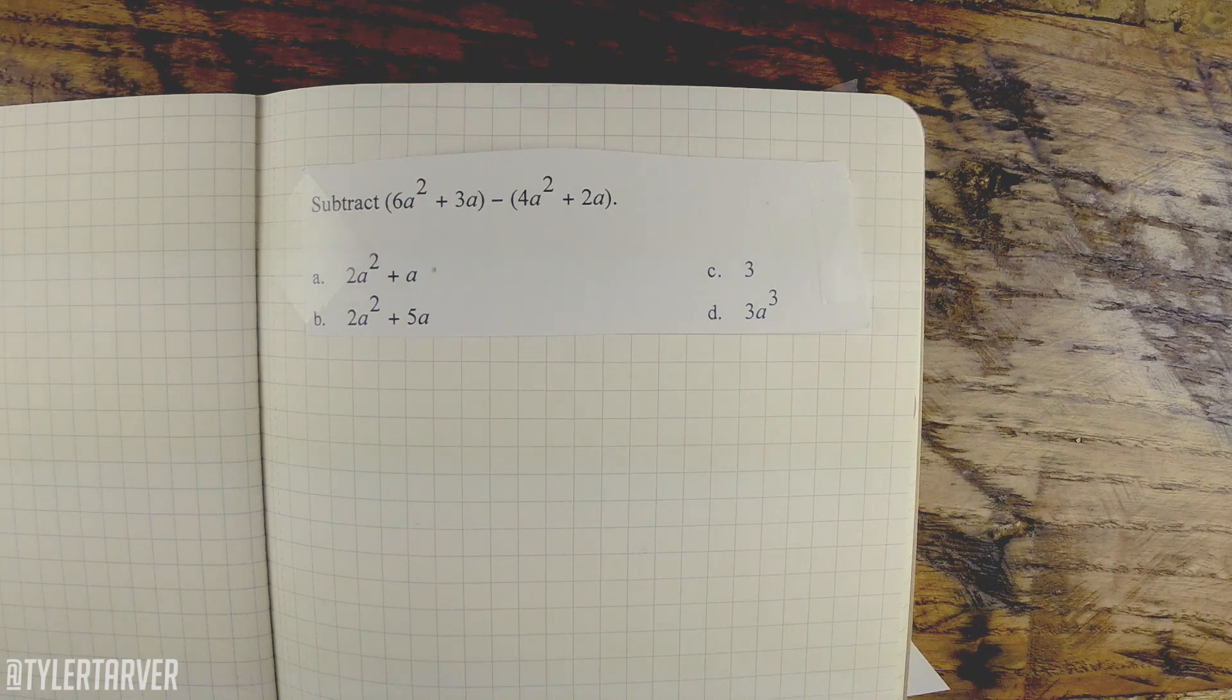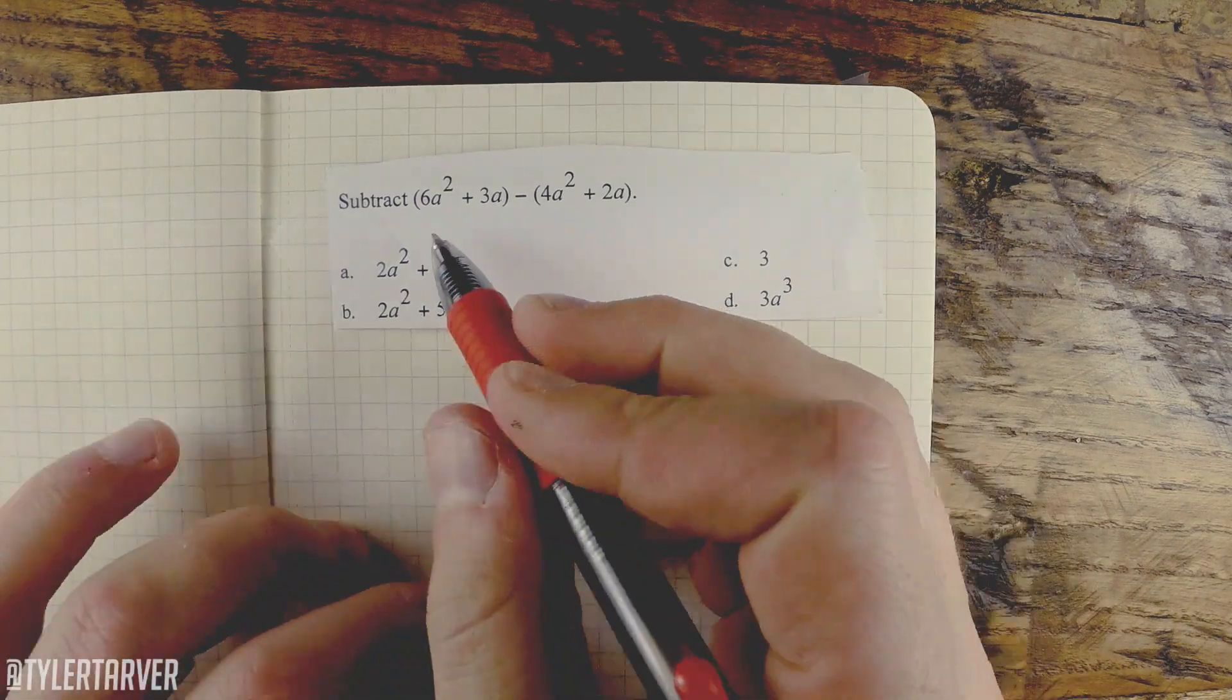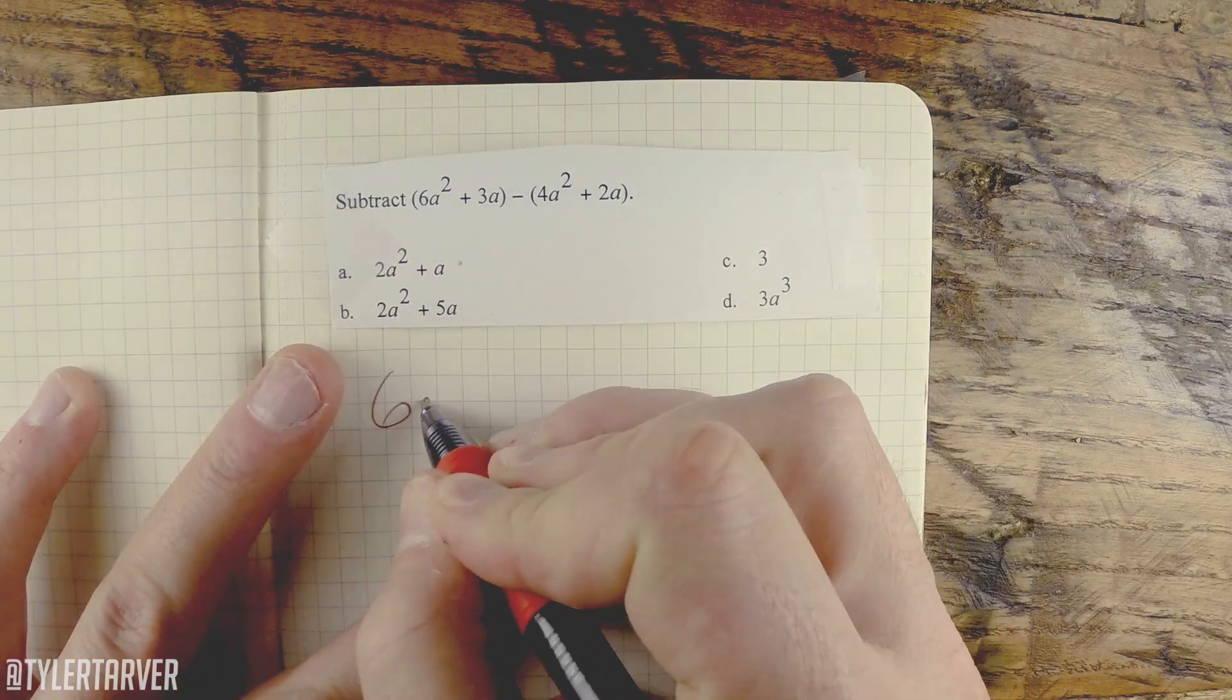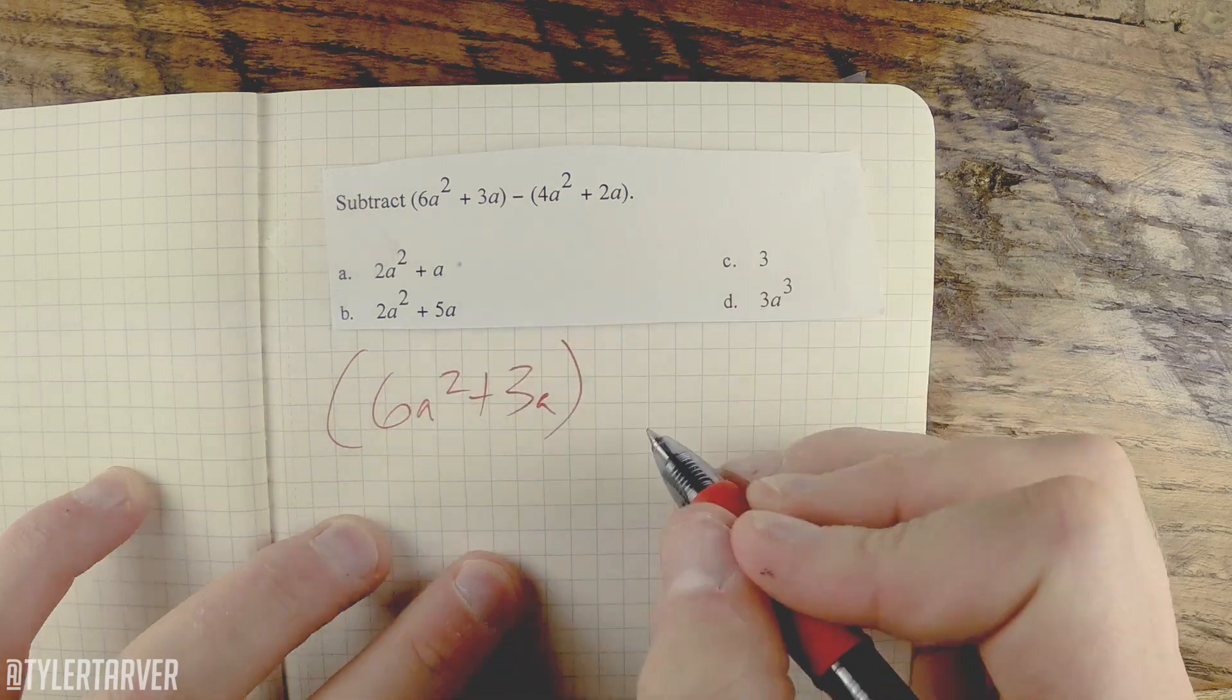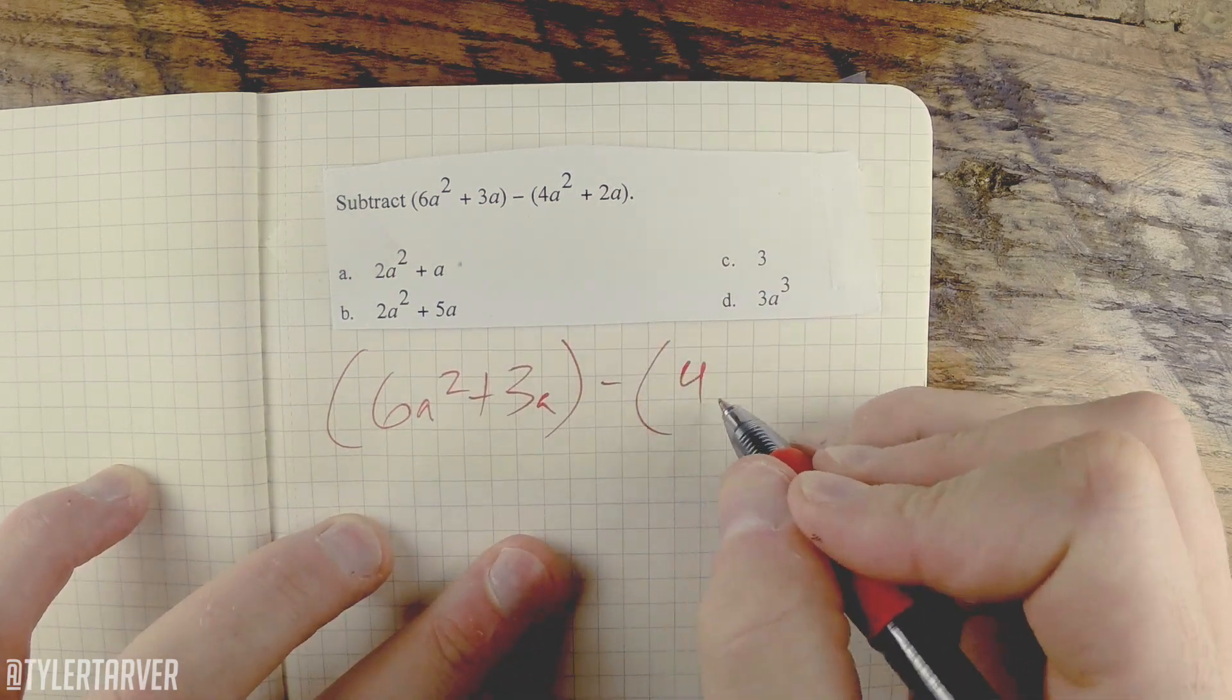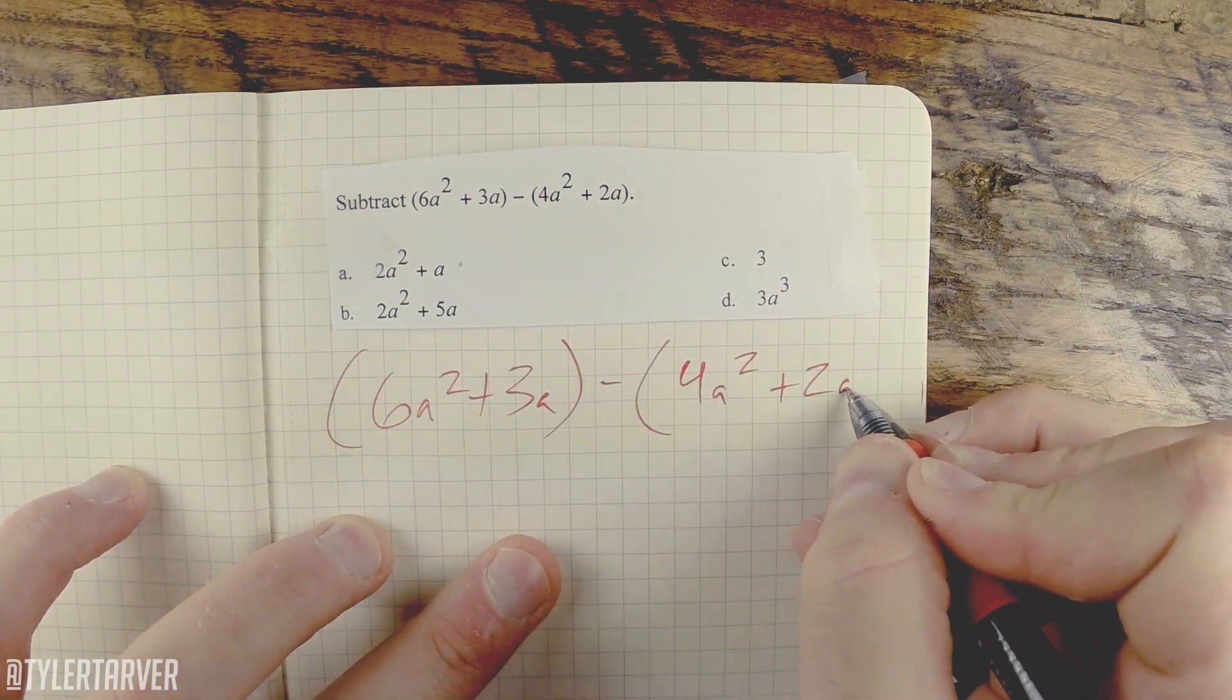Welcome back. I don't know why I talk like that. Okay, so we're subtracting these two. We've got (6a² + 3a), it's all in parentheses, minus (4a² + 2a).